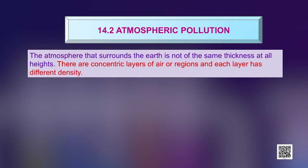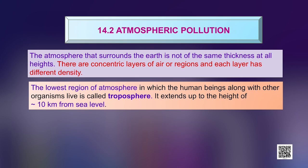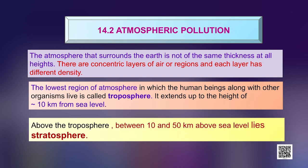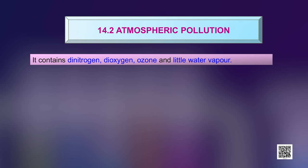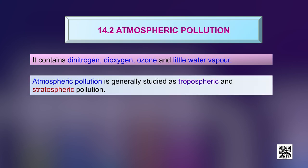The atmosphere that surrounds the earth is not of the same thickness at all heights. There are concentric layers of air or regions and each layer has different density. The lowest region of the atmosphere in which human beings along with other organisms live is called the troposphere. It extends to a height of approximately 10 kilometers from sea level. Above the troposphere, between 10 and 50 kilometers above sea level, lies the stratosphere. The stratosphere contains dinitrogen, dioxygen, ozone and little water vapor.